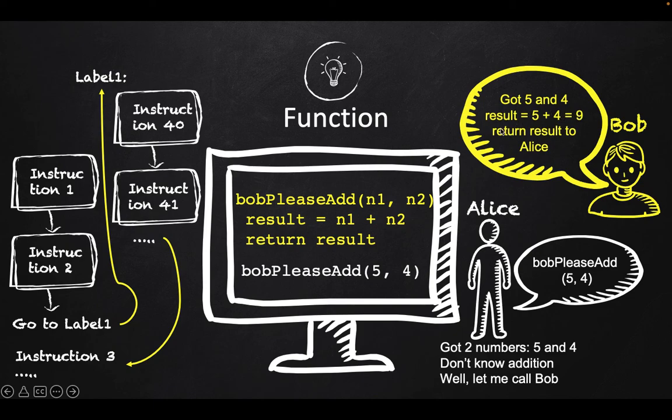And then Bob adds those two numbers and returns the result to you. So that is a function. Here, you are one piece of the program. Let's say your name is Alice. Alice is one set of program and Alice is performing some task.